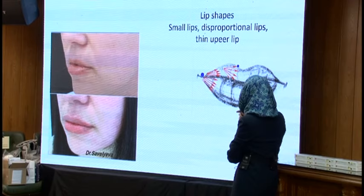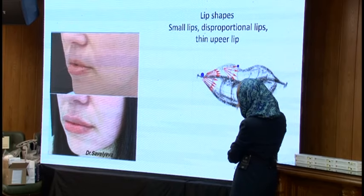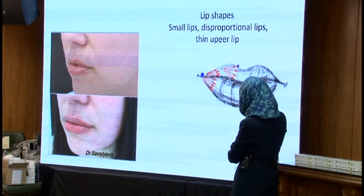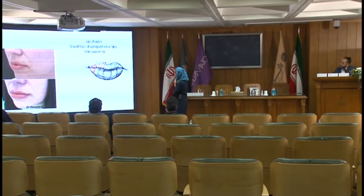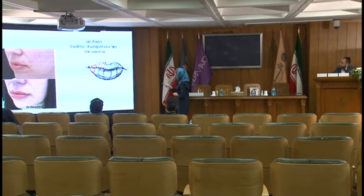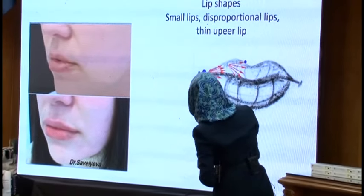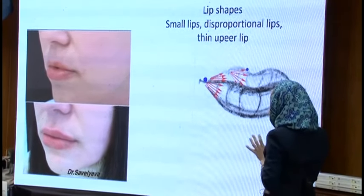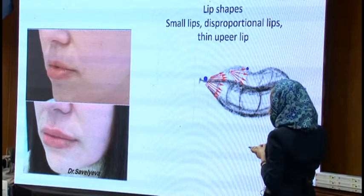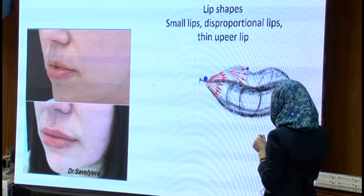This is the same small, disproportional lips. We see that the upper lip is very small and the distance between the upper lip and the nose is too long — it's not correct. That's why we pay attention to the corners of the lips; usually we don't inject there. The corner of the lips, if we talk about Russian lips, is forbidden. But in this case, we should make the lips wider because they are very short, so we do injection on the sides.